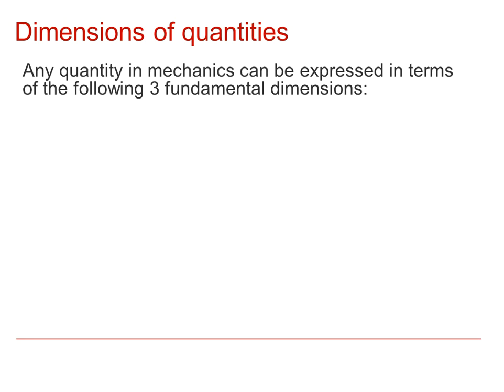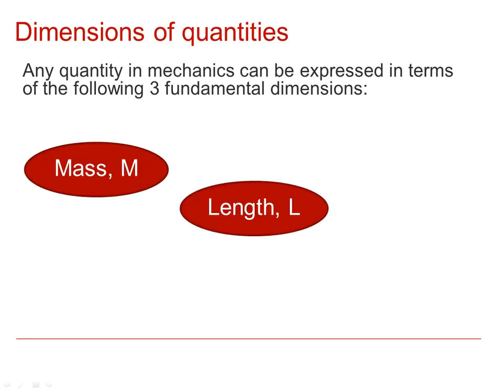Any quantity in mechanics can be expressed in terms of three fundamental dimensions. Those dimensions are mass, length and time. They're represented by the capital letters M, L and T.